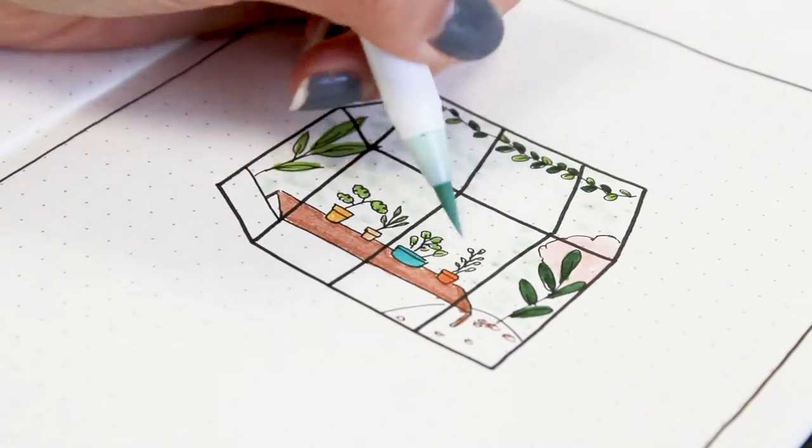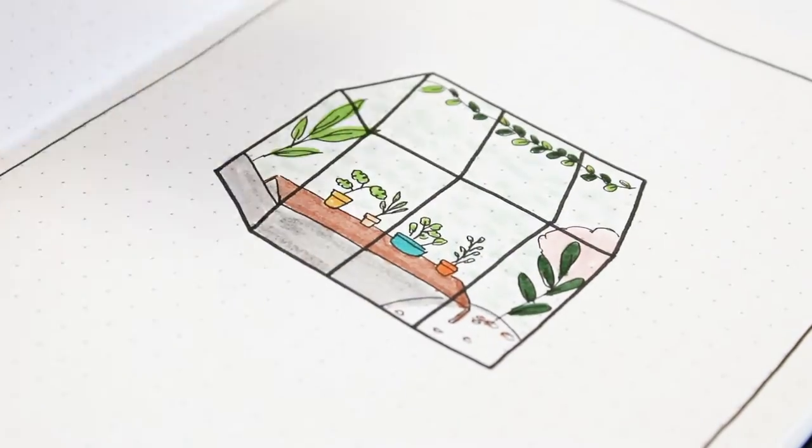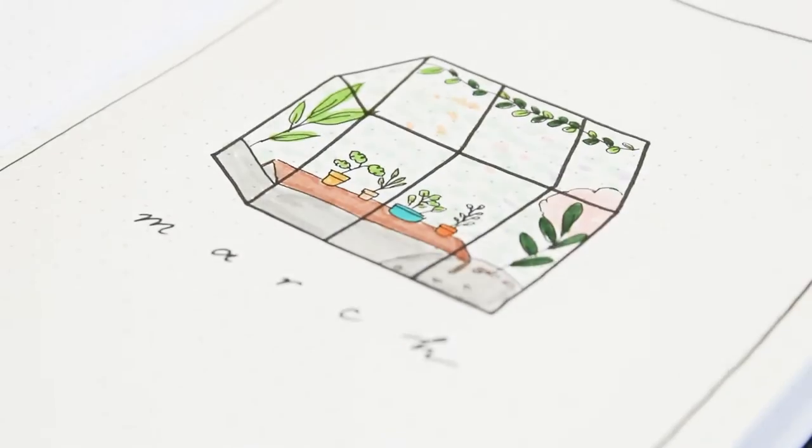So I drew the plants and then I wrote March in a cute simple writing. I'm normally a calligraphy gal when it comes to titles, but I actually really like the look of this simple lettering.